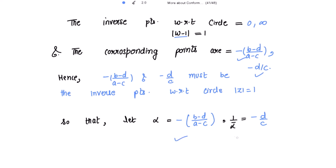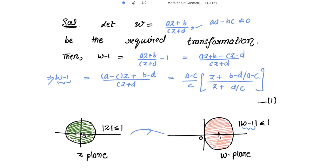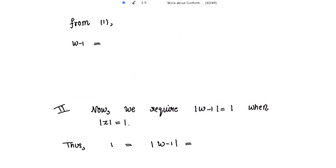Writing (b - d)/(a - c) = -α and -d/c = -1/ᾱ, we get w - 1 = [(a - c)/c] · (z - α) / (z - 1/ᾱ), which is further equal to [(a - c)/c] · (z - α) / [(zᾱ - 1)/ᾱ]. Please mark this as equation 2.